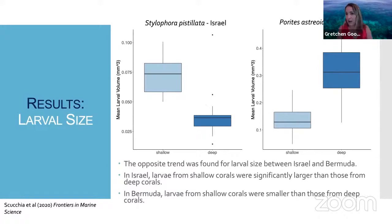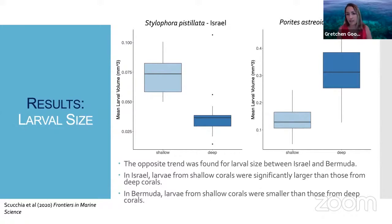What we found was quite interesting — we found the completely opposite result in terms of larval size between Stylophora pistillata in Israel and Porites astreoides in Bermuda. In Israel, larvae from shallow corals were significantly larger than larvae produced by deep corals. In contrast, in Bermuda, we found smaller larvae produced by shallow corals compared to larger larvae from deep corals.